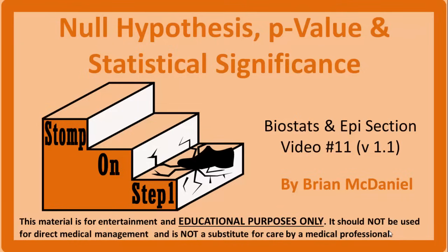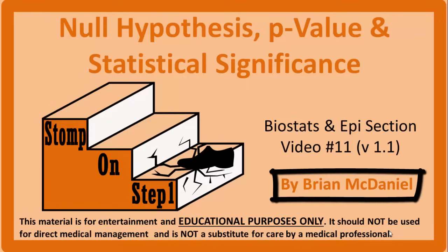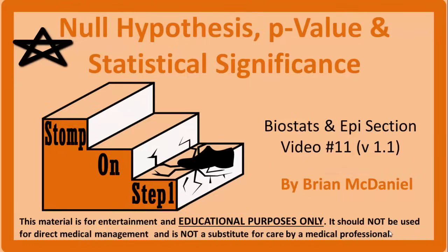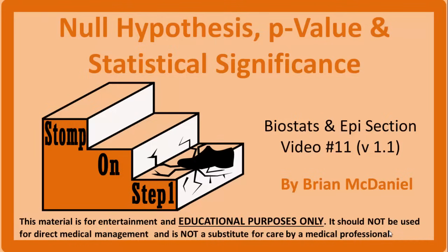Distinguished future physicians, welcome to Stomp on Step 1, the only free video series that helps you study more efficiently by focusing on the highest yield material. I'm Brian McDaniel and I will be your guide on this journey through the null hypothesis, alternative hypothesis, type 1 and type 2 error, p-value, alpha, beta, power, and statistical significance. This is the 11th video in my playlist covering all of Biostats and Epidemiology for the USMLE Step 1 Medical Board Exam. There is a lot to cover, but we will try to move through things quickly and break them down into bite-sized pieces.